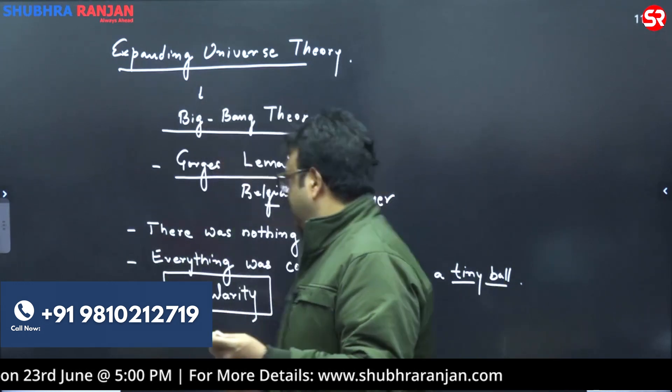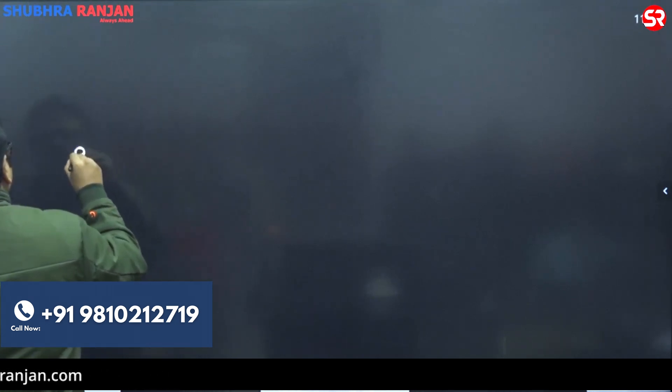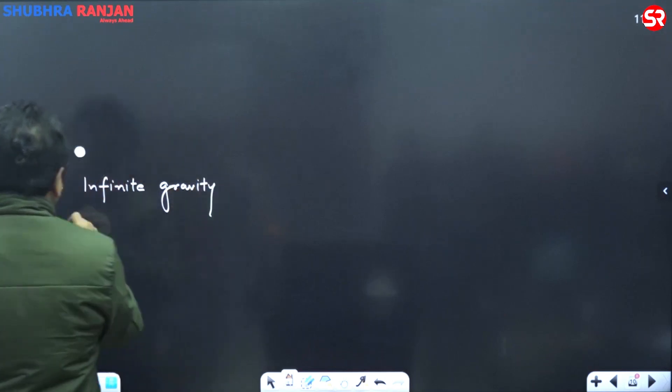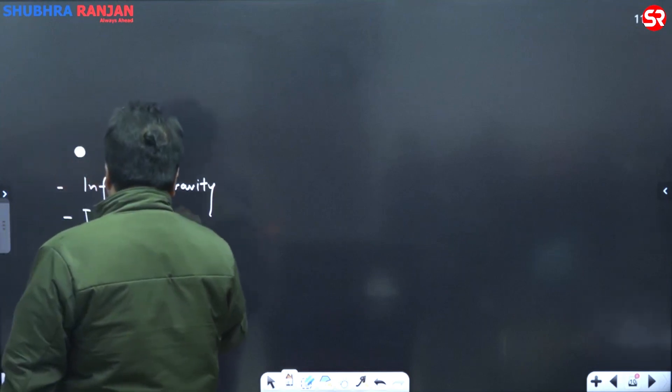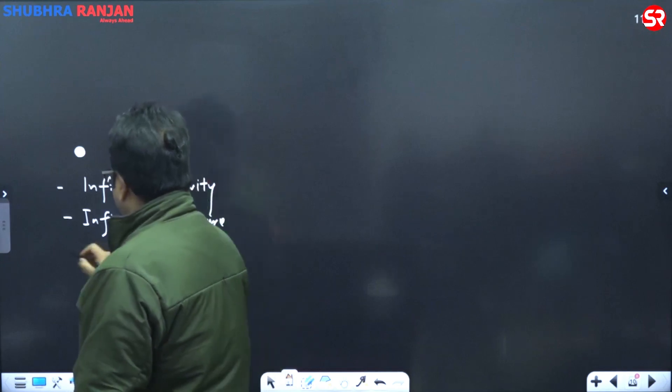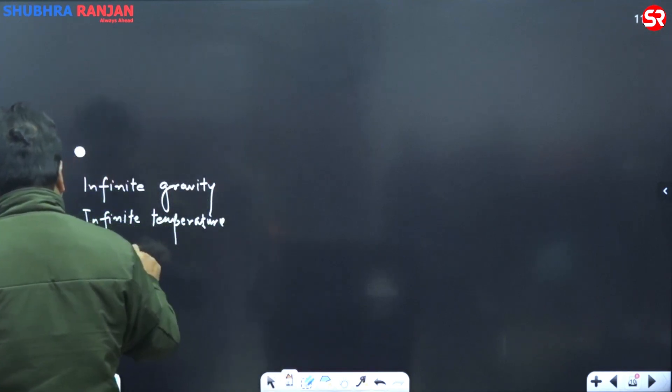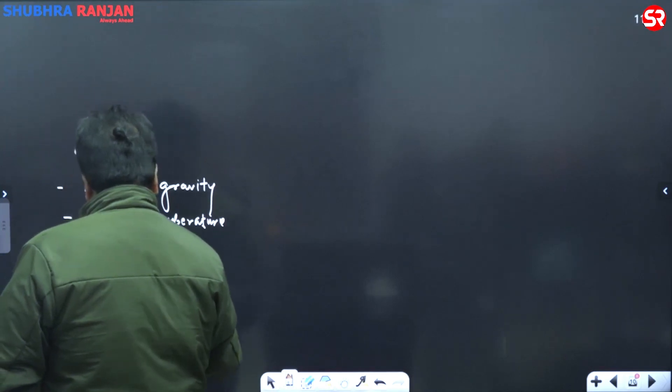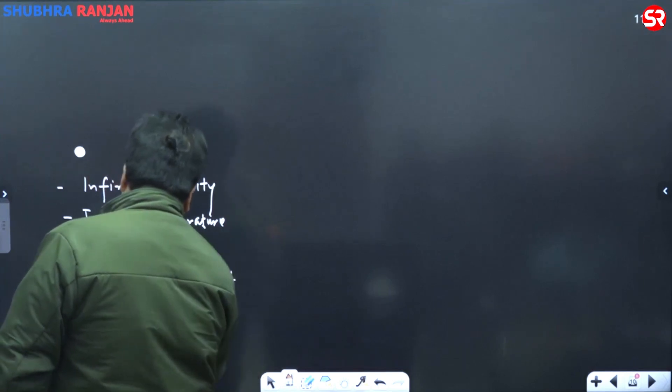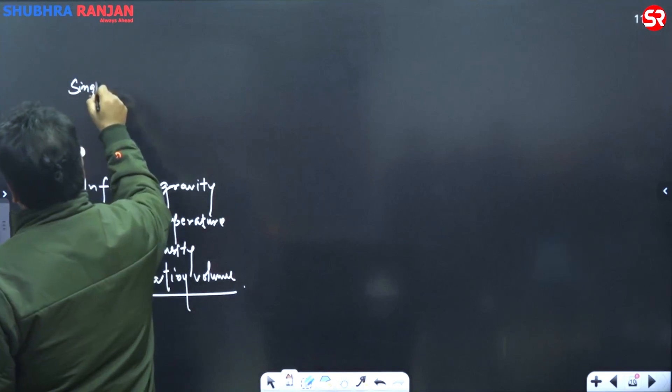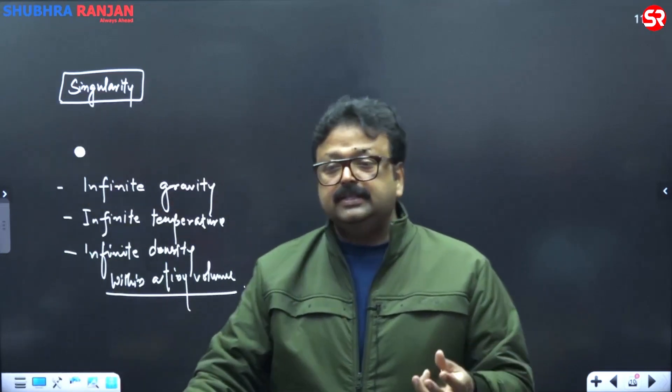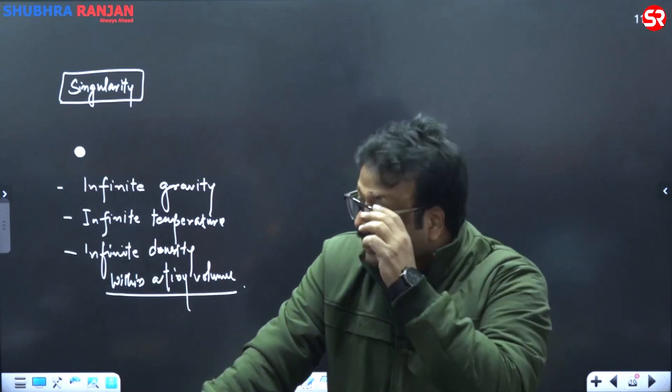This singularity has certain properties. What was those properties? Within a tiny ball, there is infinite gravity, infinite temperature, infinite density within a tiny volume. You happen to have infinite density, infinite temperature and due to infinite density, there is infinite gravity.